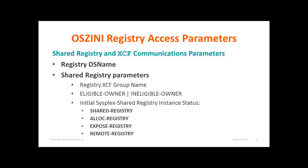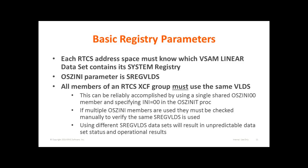XCF Shared Registry Support necessitates the existence of several different access parameters. These include those necessary for XCF to function, as well as some RTCS registry-specific shared registry attributes. The DS name of the backing VLDS for the RTCS subsystem system registry is specified in the sreg VLDS parameter of the OSZAny member. All members of an XCF group, which should share the same dataset, must point to the same sreg VLDS. If members use the same OSZAny member — usually 00 — this will happen automatically.